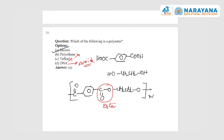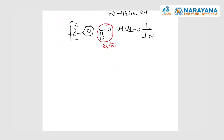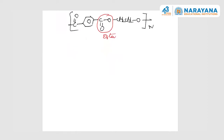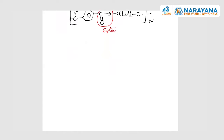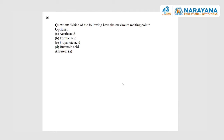Next question: which of the following has the maximum melting point? The acids given are formic acid, propanoic acid, and butanoic acid. Among them, the one with the highest molecular weight — butanoic acid (C4) — possesses the maximum melting point. Formic acid has a lower molecular weight, so its melting point is less.